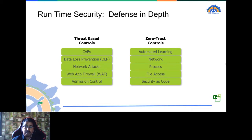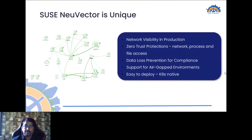You can export this behavior as security-as-code and incorporate it in your application, or export it from your QA or test landscape and deploy it in production. NeuVector allows you to have complete network visibility in your environments, implement zero-trust protections, protect against any anomalies in network, process, or file access, and protect against data loss prevention — very useful from a compliance perspective. It also supports air-gapped environments and can easily be deployed on any Kubernetes distribution.